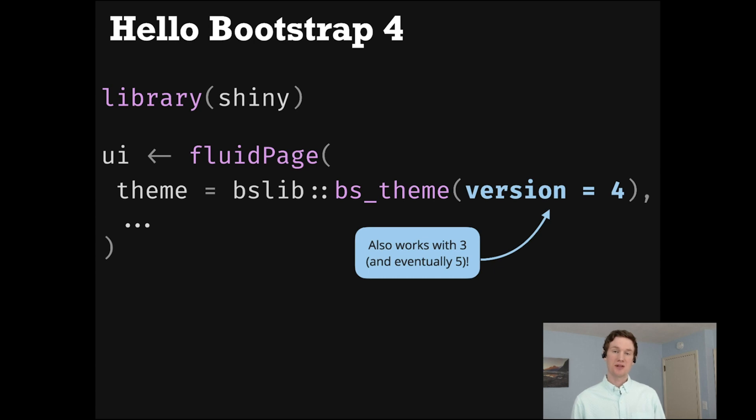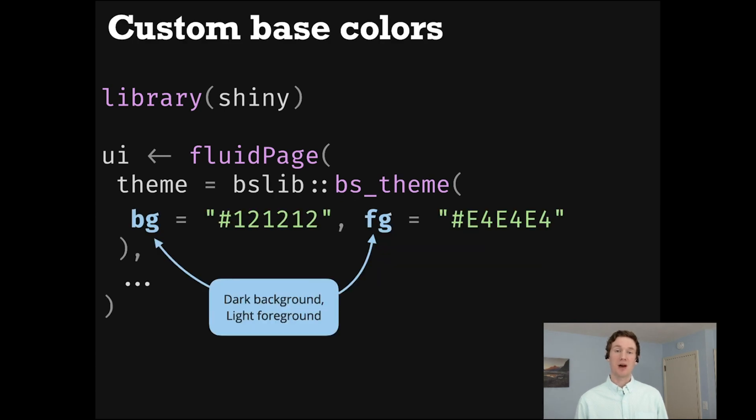So if you happen to put this inside of an existing application and you encounter any issues, just know that you can also downgrade to Bootstrap 3 when using the bslib package. And in the future, we plan on supporting Bootstrap 5 and higher. And regardless of what Bootstrap version you're using, you can easily customize the main colors and fonts of your application.